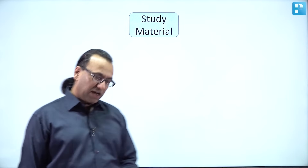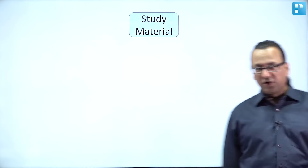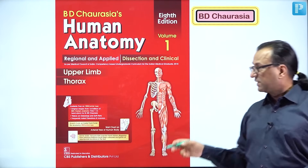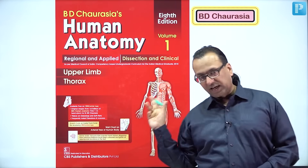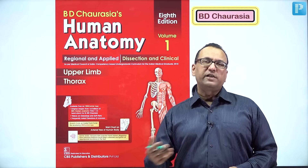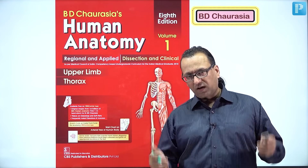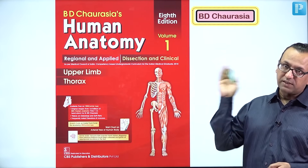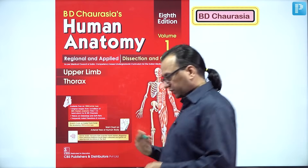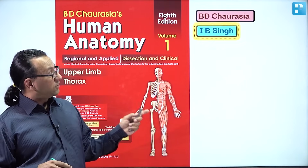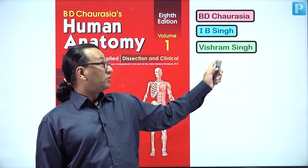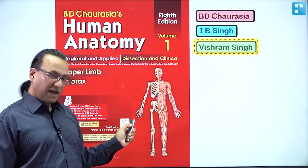Students always ask about study material — which book to read from. In first year, the name everybody knows is BD Chaurasia. Especially these days as it is being updated, the book has dissection methodology, embryology, histology, gross anatomy, clinical anatomy, and radiological anatomy — it becomes an all-in-one book for anatomy, especially for first year since you have only one academic year. You can also read histology from Inderbir Singh, embryology from Vishram Singh, and neuro anatomy from Vishram Singh, though BD Chaurasia itself has a lot of neuro anatomy included.